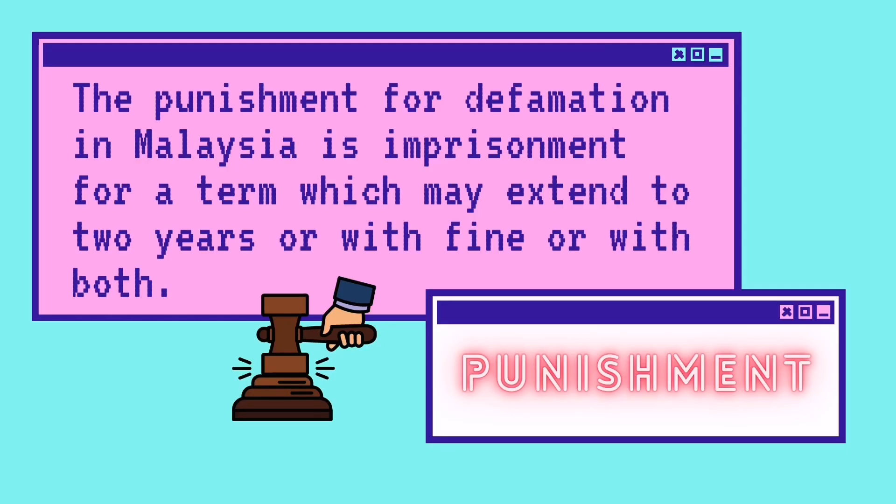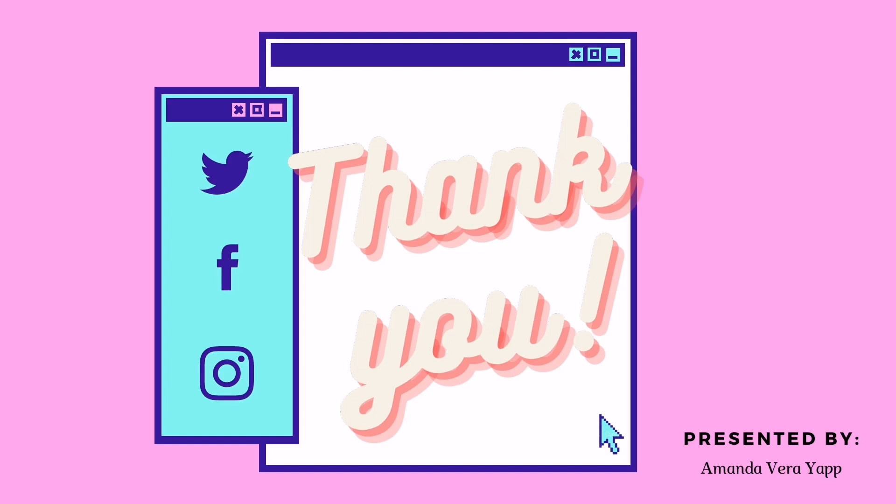The punishment for defamation in Malaysia is imprisonment for a term which may extend to two years, or with fines, or with both. So you either have to pay with money or you go to jail. That is all for me. Thank you.